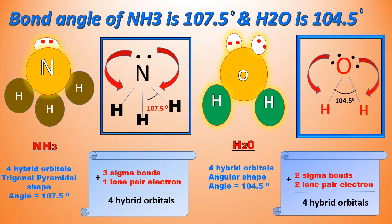as you can see in the case of ammonia we have one lone pair and three sigma bonds, resulting in a total of four hybrid orbitals. So the four hybrid orbitals indicate sp3 hybridization.